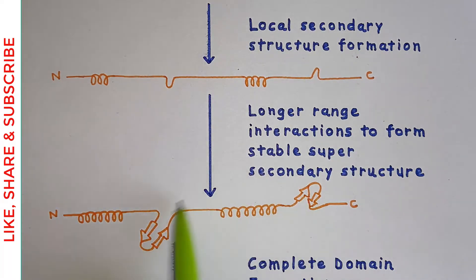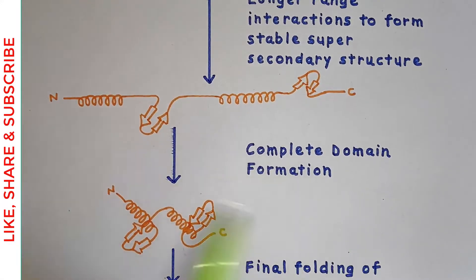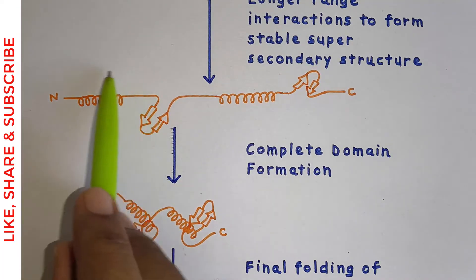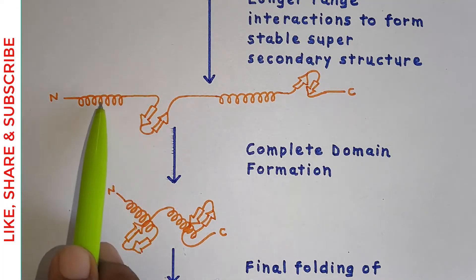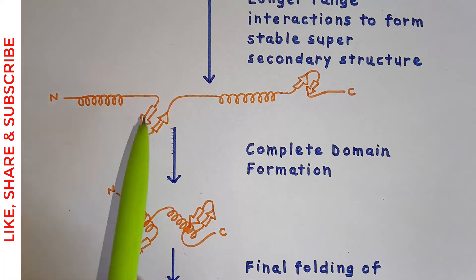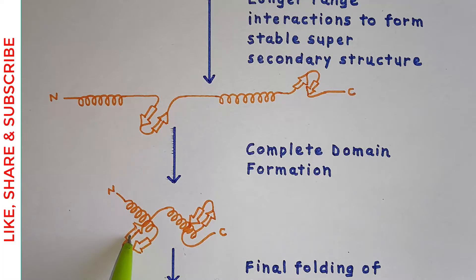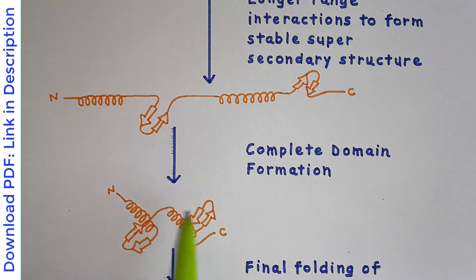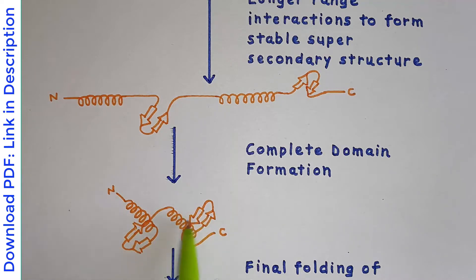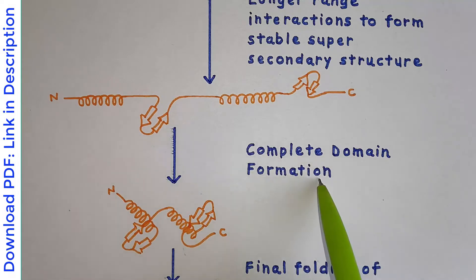Now there are longer-range secondary and super-secondary structures that are stable. In the third step, these secondary structures fold further — the alpha helix folds upon the beta sheet, forming a globule-like part. Something similar occurs on the other side, forming another globule-like part, both attached by a flexible portion. We can call these domain one and domain two, which may be structurally the same or different.